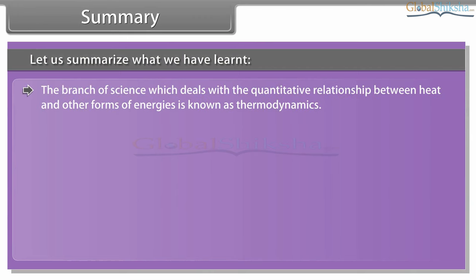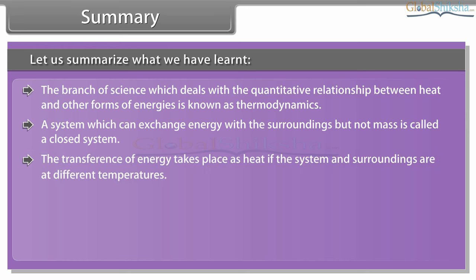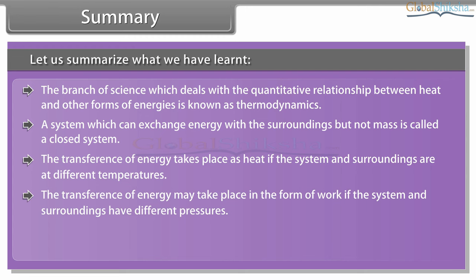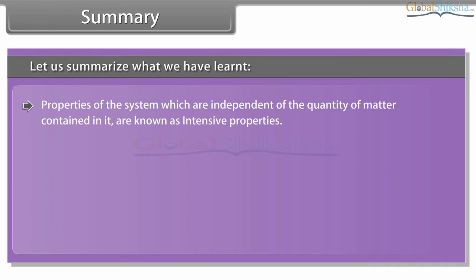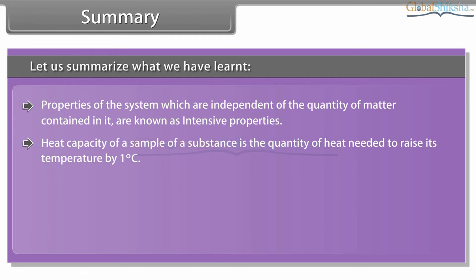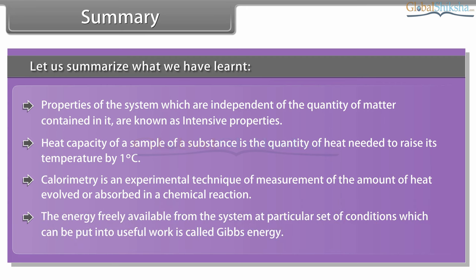Summary: the branch of science which deals with the quantitative relationship between heat and other forms of energies is known as thermodynamics. A system which can exchange energy with the surroundings but not mass is called a closed system. The transference of energy takes place as heat if the system and surroundings are at different temperatures; it may take place as work if they have different pressures. Internal energy is made up of kinetic and potential energies of the constituent particles and is a state function. Properties of the system which are independent of the quantity of matter contained in it are known as intensive properties. Heat capacity is the quantity of heat needed to raise a substance's temperature by 1 degree Celsius. Calorimetry is an experimental technique to measure heat evolved or absorbed in a chemical reaction. The energy freely available from the system which can be put into useful work is called Gibbs energy.